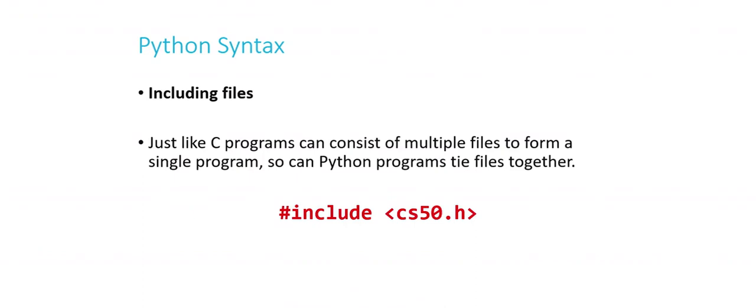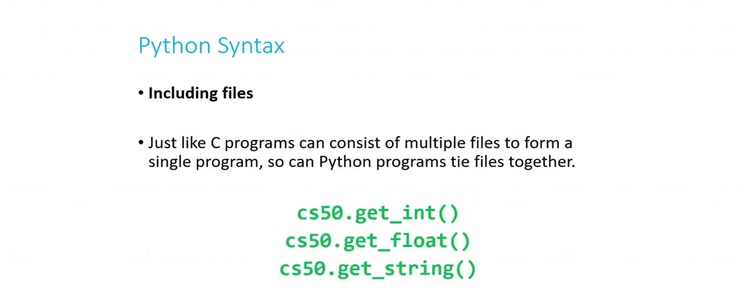In C, we used #include to bring in libraries like stdio.h or cs50.h. In Python, we use 'import', and instead of header files or libraries, we call them modules. For example, 'import cs50' lets you call 'cs50.get_int()', 'cs50.get_float()', 'cs50.get_string()', 'cs50.get_char()' — all the functions you've used in C. CS50 is basically a module defining several methods that can then be invoked.